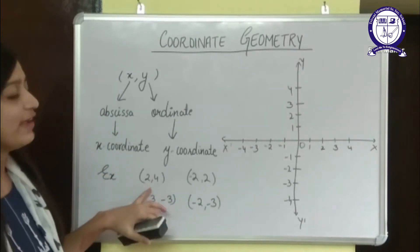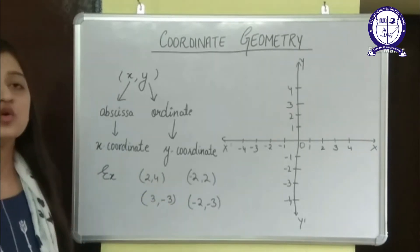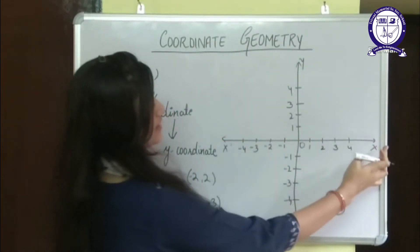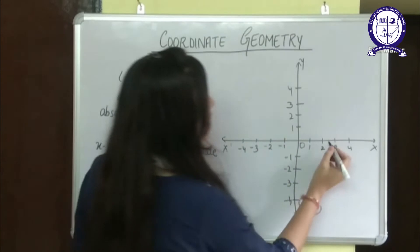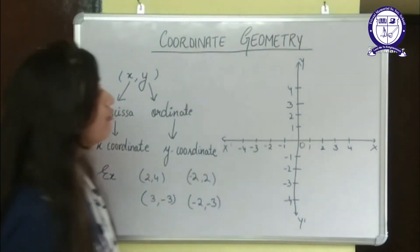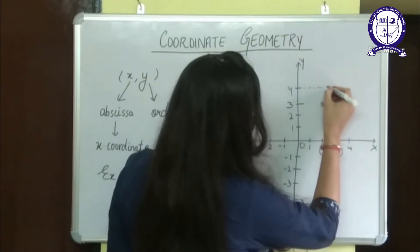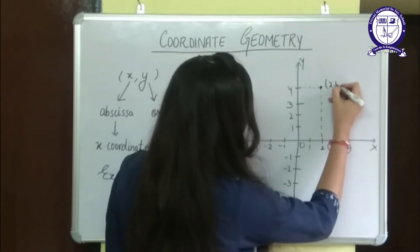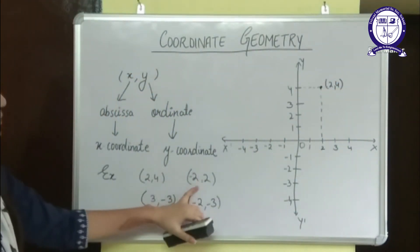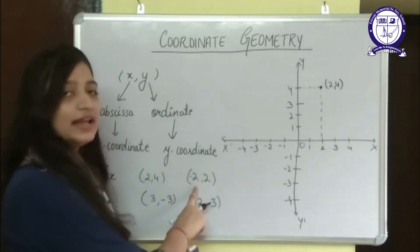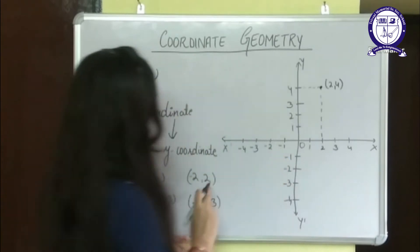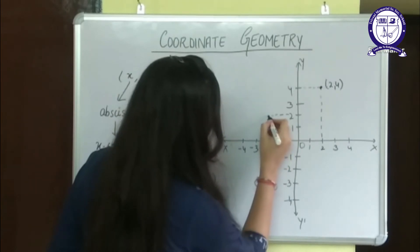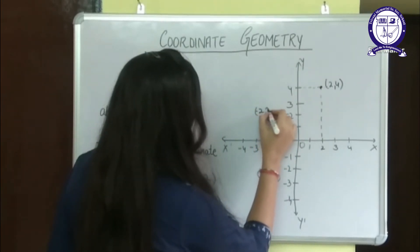The first value is the x coordinate and the second is the y coordinate. I will take 2 on the x axis and 4 on the y axis. Drawing lines to meet at point (2, 4). Similarly, for (-2, 2), we take minus 2 on the x axis and 2 on the y axis, giving us the point (-2, 2).